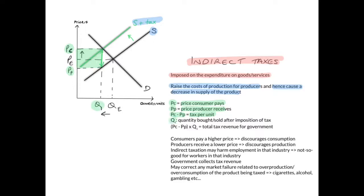Q1 is the quantity bought and sold after the imposition of the tax. PC minus PP multiplied by Q1 gives you the total tax revenue for the government, shown as the shaded green box in the diagram. Consumers will pay a higher price, so an indirect tax discourages consumption. Producers receive a lower price, so an indirect tax also discourages production. Indirect taxation may therefore harm employment in that industry.